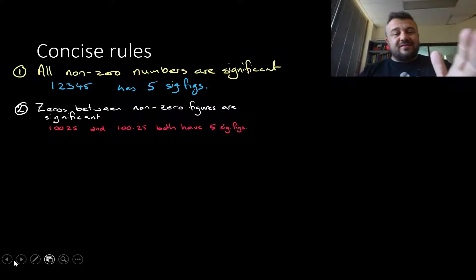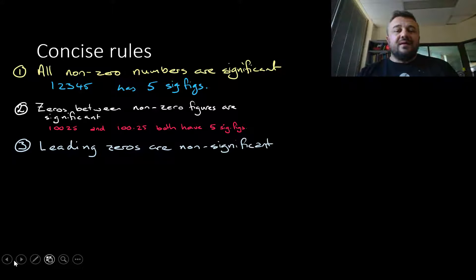Leading zeros are non-significant, and that's because there's lots of ways to write numbers depending on what system you're using. For example, 002.5, which is how it'll be written on a set of scales, and 0.025 both have two significant figures. Leading zeros are non-significant.